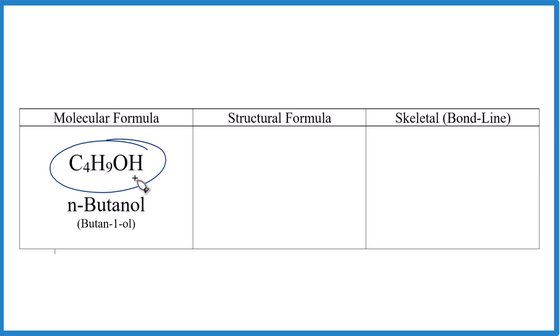So this is the molecular formula. It tells us how many atoms of each type we have. And note that OH on the end, that's because this is an alcohol. So when you have carbons, hydrogens, and then the OH, it's an alcohol.